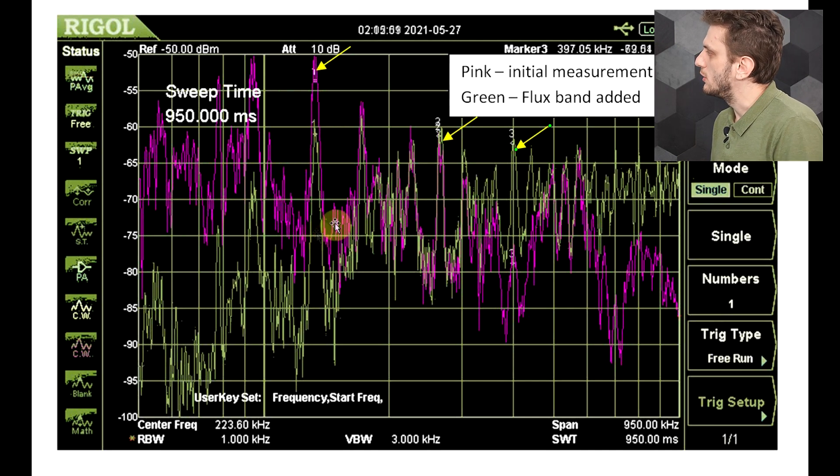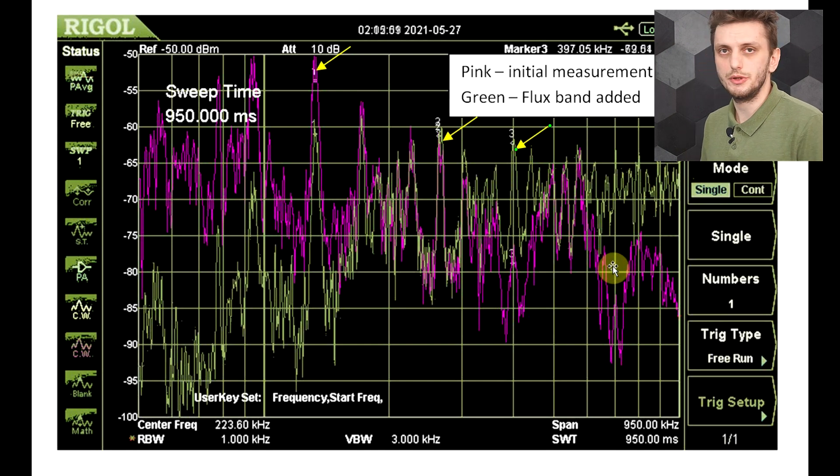Now we can also see that all this low frequency component went down by quite a lot, so more than 10 decibels. But we also see an increase in higher frequencies. And this can be partly attributed to the fact that our flux band was left electrically floating. So it works like a floating electric field shield. Now I did try grounding it and that didn't really help, so anyway.